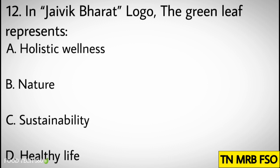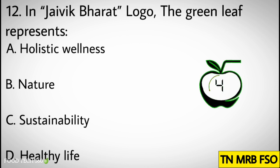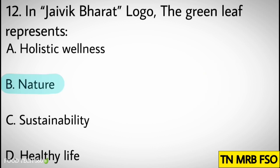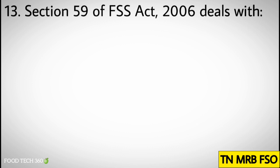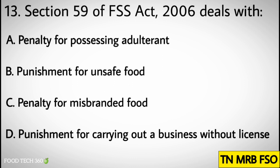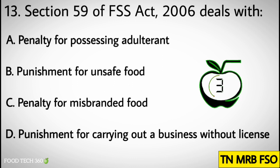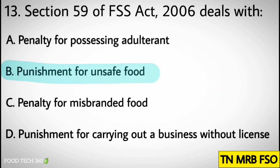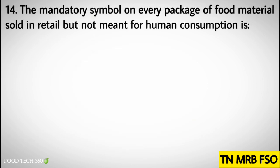Question number twelve: In Jaivik Bharat logo, the green leaf represents — options: A) Holistic wellness, B) Nature, C) Sustainability, D) Healthy life. Correct answer: B) Nature. Question number thirteen: Section 59 of FSS Act 2006 deals with — options: A) Penalty for possessing adulterant, B) Punishment for unsafe food, C) Penalty for misbranded food, D) Punishment for carrying out a business without a license. Correct answer: B) Punishment for unsafe food.